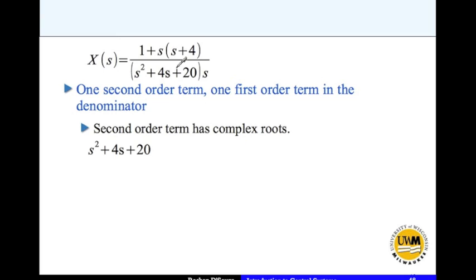I analyze the second order term and I do b squared minus 4ac which is b is this, c is this, a is 1. So b squared minus 4ac is 4 squared minus 4 times 20 which is less than 0, so complex term.